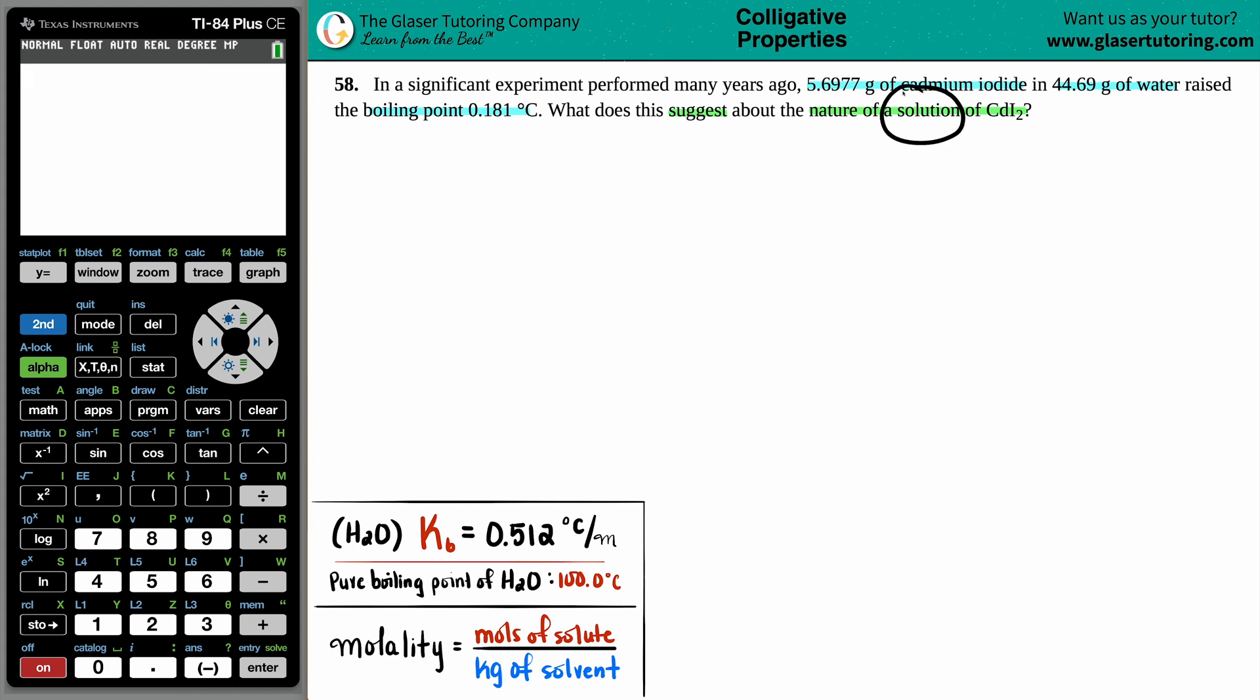And we're talking about solution chemistry. Now, just know that when you're dealing with boiling points, boiling points will only be able to elevate or get higher. So this is a boiling point elevation. A boiling point will never drop from the pure solvent.